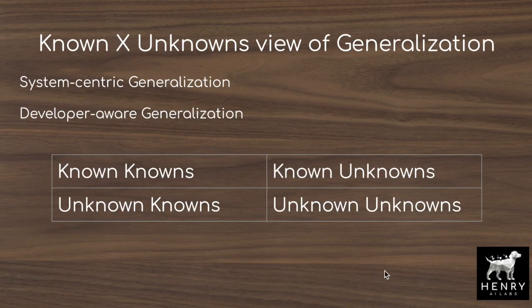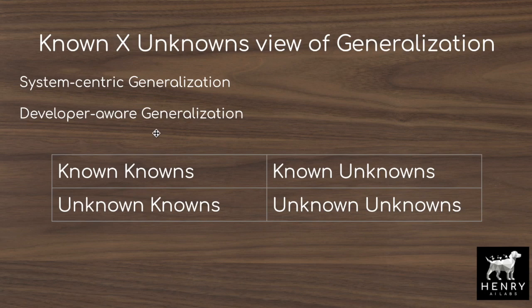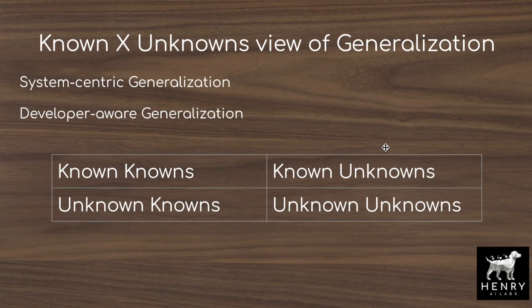The first definition of generalization in the paper is the difference between system-centric and developer-aware generalization. It's useful to think about this in terms of known/unknowns with respect to novel encounters the system will face. Known knowns — in a dog vs. cat classification challenge, we have all the different dog breeds and cats. A known unknown would be a new dog breed that we as developers know we're going to introduce, and we can use data augmentation with generative models to construct additional samples that help our classifier generalize to these known unknowns.